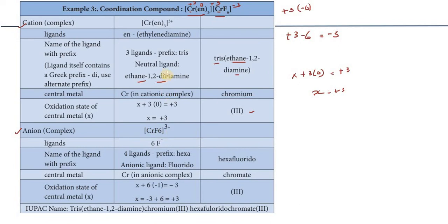Now the anionic complex CrF₆: chromium is plus 3 oxidation state. Fluorine is the anionic ligand. There are 6 ligands, so prefix is hexa. The anionic ligand is fluorine - named fluoro. Chromium in the anionic complex is named chromate. The oxidation state is plus 3, represented as Roman numeral III.